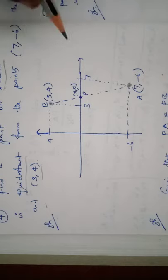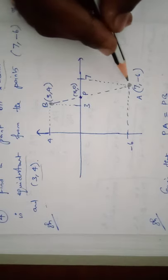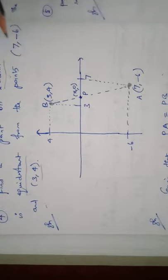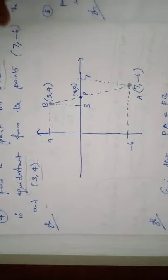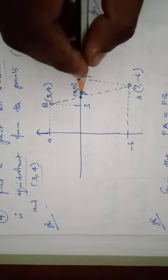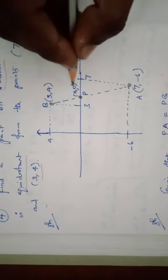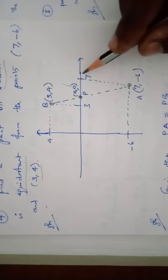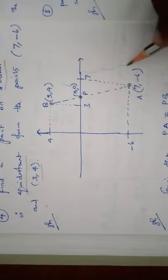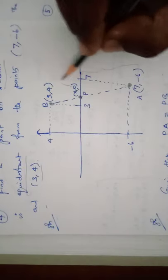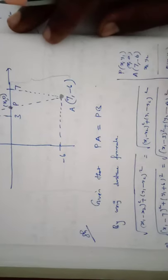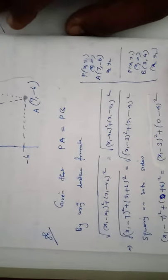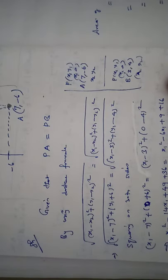The two points are equidistant from point P on the x-axis. Since P lies on the x-axis, y equals 0, so P is (x, 0). The distances PA and PB are equal, so PA equals PB.